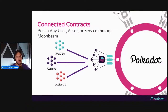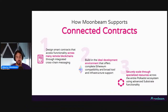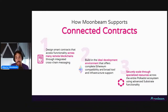Multi-chain and cross-chain experiences are going to become more common and less troublesome for end users — the hard work will be for developers. Moonbeam supports connected contracts because you can design smart contracts that access many remote blockchains through integrated cross-chain messaging. Moonbeam offers unmatched Ethereum compatibility, providing the ideal development environment since Ethereum tooling is way ahead in terms of features. Connected to Polkadot, you can securely scale through specialized app chains. The key innovation is general message passing — blockchains communicating through cross-chain protocols, and Polkadot has its own system called XCM.